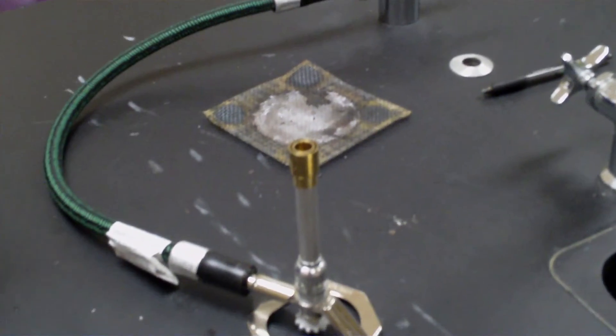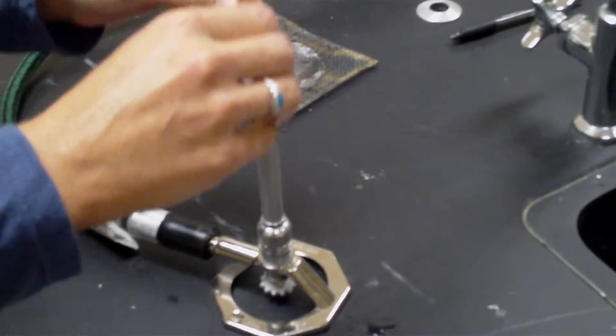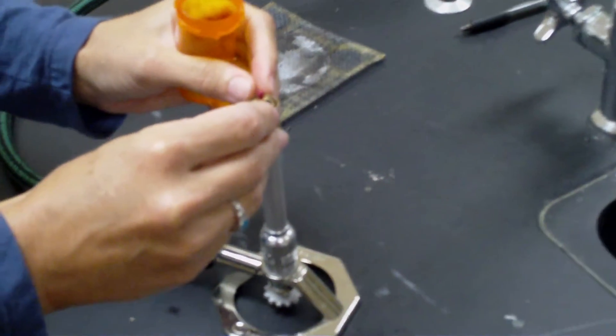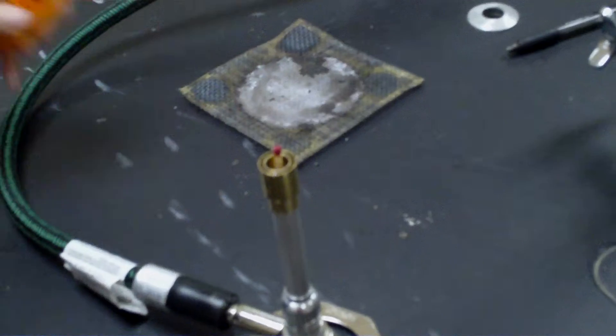And the last thing we're going to do is put a pin in the center. Put the match in the center of the barrel, and we're going to relight it.